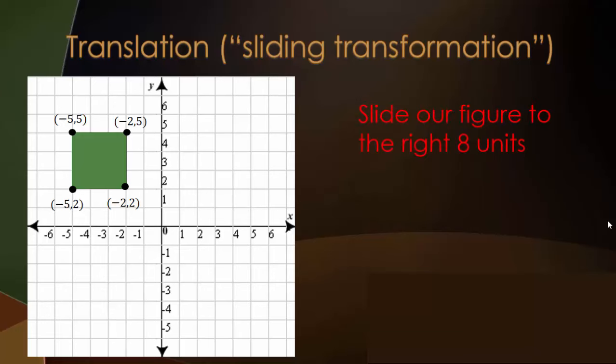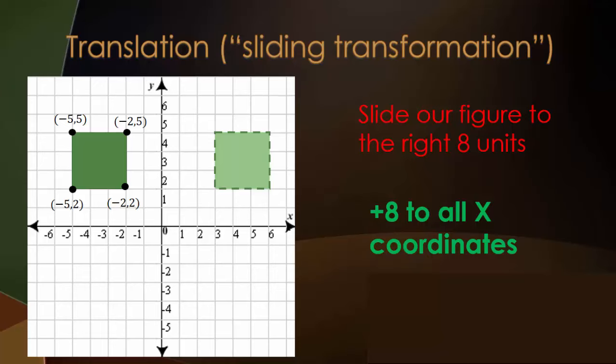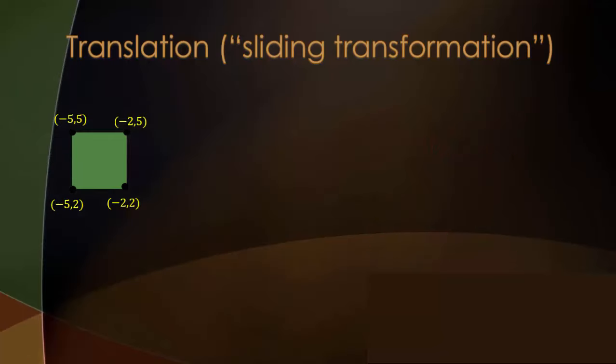Now remember, we want to slide our figure to the right, 8 units. How can we do this? If we add 8 to every single x coordinate, including the vertices of our figure, that will translate our entire figure from quadrant 2 to quadrant 1. So let's do that.